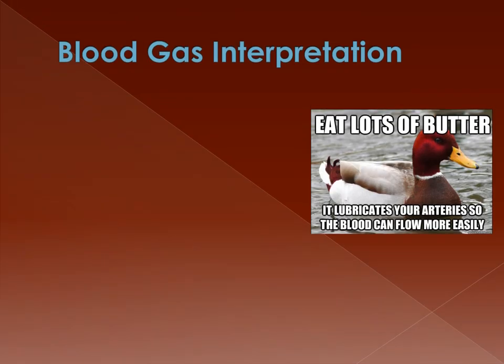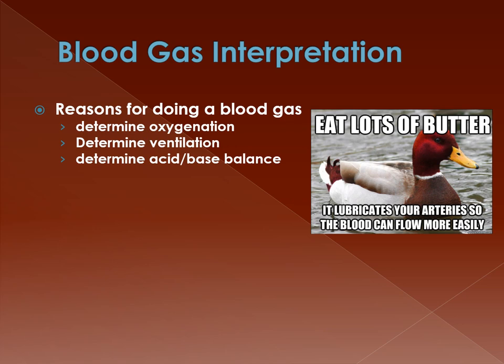Welcome to another lecture on blood gas — this one gets into interpretation, going a bit deeper than we did in pulmonary fundamentals. The first things we'll talk about are the reasons for doing a blood gas: to determine the oxygen level of the patient's body, to look at how they're breathing, and to see if there's an acid-base balance disorder.